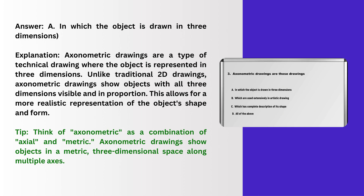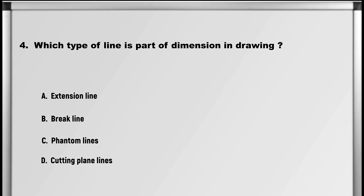Explanation: Axonometric drawings are a type of technical drawing where the object is represented in three dimensions. Unlike traditional 2D drawings, axonometric drawings show objects with all three dimensions visible and in proportion. This allows for a more realistic representation of the object's shape and form. Tip: think of axonometric as a combination of axial and metric — axonometric drawings show objects in a metric, three-dimensional space along multiple axes.